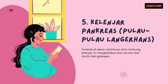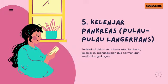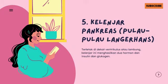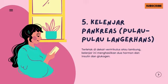Kelenjar pankreas terletak di dekat ventriculus atau lambung. Kelenjar ini menghasilkan dua hormon yaitu insulin dan glukagon.